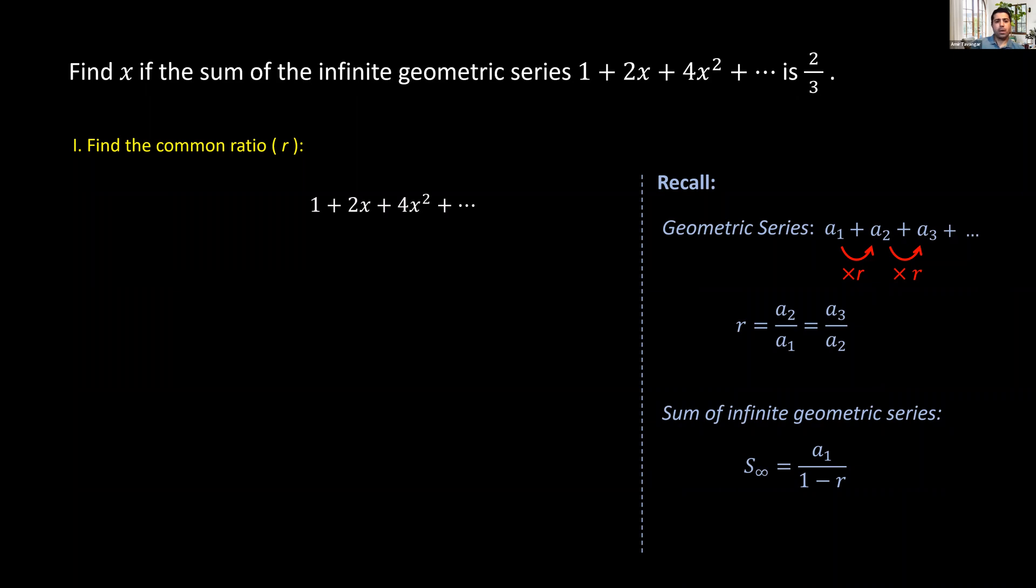The common ratio can be found by dividing any two consecutive terms. For example, a1 is 1 and a2 is 2x, so the common ratio is 2x over 1, which simplifies to 2x.